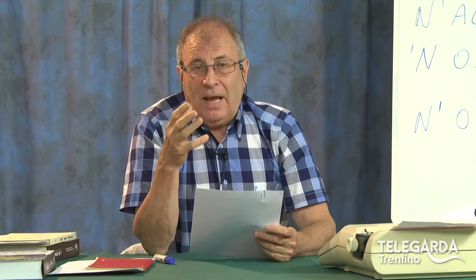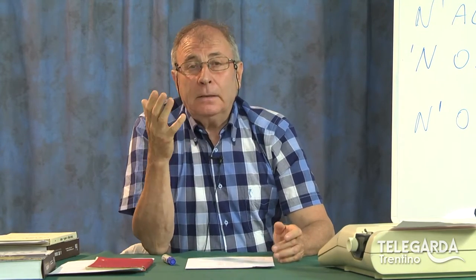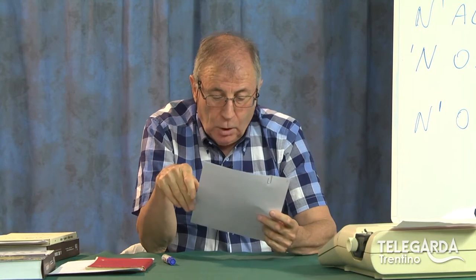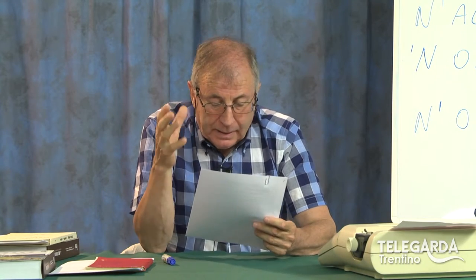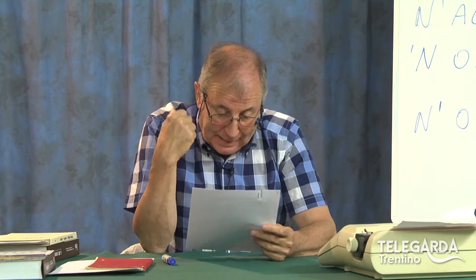Qual è il verso più famoso? È sicuramente l'endecasillabo, cioè quello di undici sillabe, reso famoso da Dante Alighieri con la sua Divina Commedia: Nel mezzo del cammin di nostra vita — vedete, undici sillabe. Potrei andare avanti e vedrete che sono sempre undici sillabe: è l'endecasillabo del padre della lingua italiana.